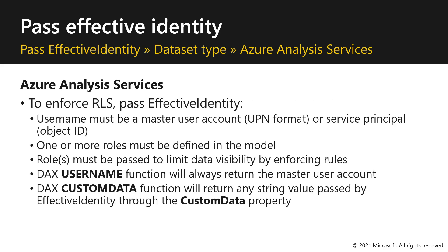To enforce row-level security, pass effective identity. The username must be a master user account in UPN format, or a service principal with the object ID. One or more roles must be defined in the model, and the roles must be passed to limit data visibility by enforcing its rules. The DAX username function will always return the master user account, and the DAX custom data function will return any string value passed by effective identity through the custom data property.